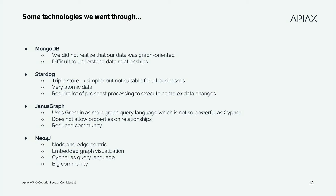We tried JanusGraph, which uses Gremlin as its main graph query language, but it's not as powerful and flexible as Cypher. At that time it did not allow properties on relationships, which was important for us, and the community is quite small, making it difficult to find people with the same issues. Finally, we ended up with Neo4j, which focuses on both nodes and edges — you have containers of information for both. You can introduce any kind of properties on nodes and also on edges. It has an embedded graph visualization, uses Cypher as its main query language, and has a huge community.